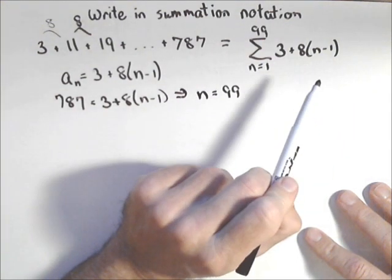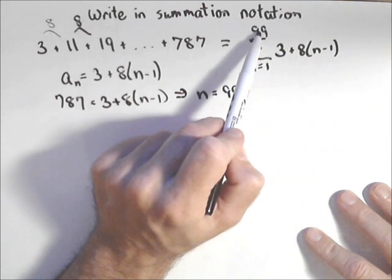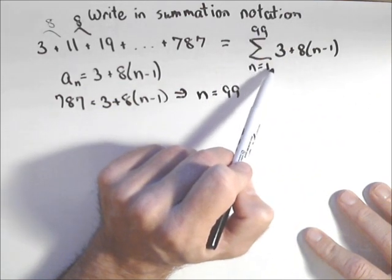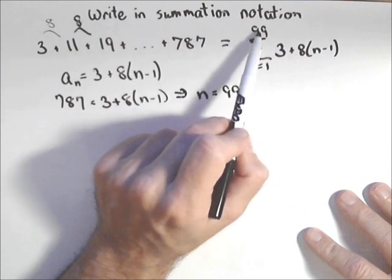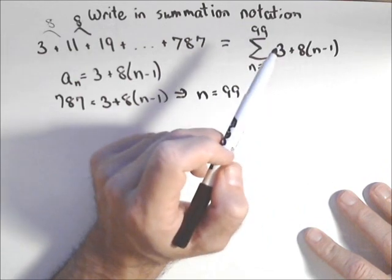One thing I'll point out, there are 99 terms, but notice if you do top minus bottom, you get 98. Whenever you want to know the number of terms in summation notation, it's always top minus bottom plus 1.